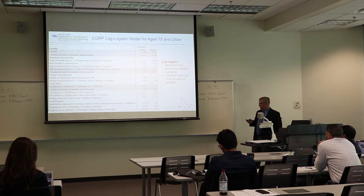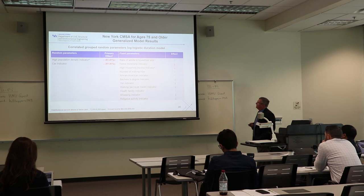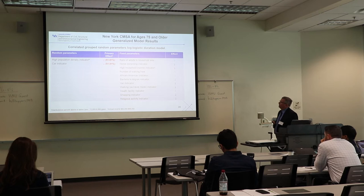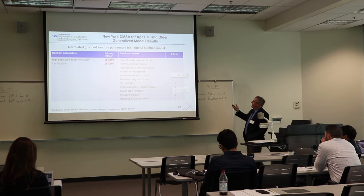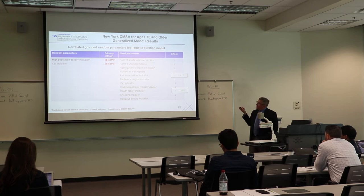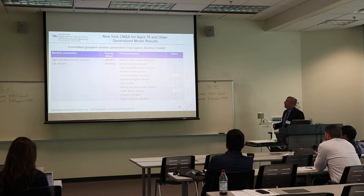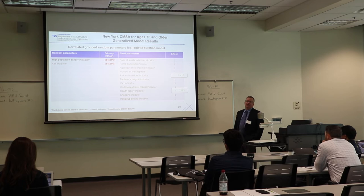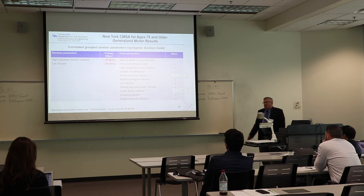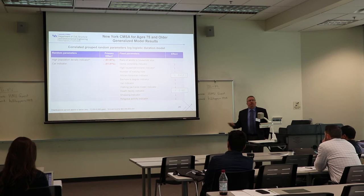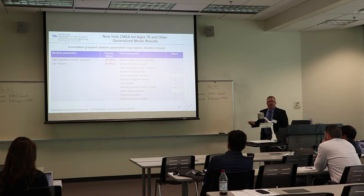For 75 and older in the New York area, we have an indicator for African-American. Going from zero to one — not African-American to African-American — trip durations increase by nearly 42%. That's a lot. If the purpose is going to a health facility like a doctor's or dental office, trip durations go up by 18.5%. This might indicate that people are willing to travel farther for specific treatment, though we don't have full information on why in this particular data.